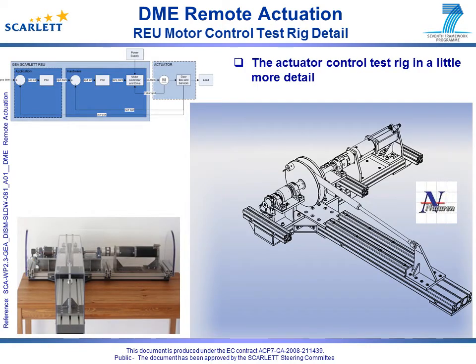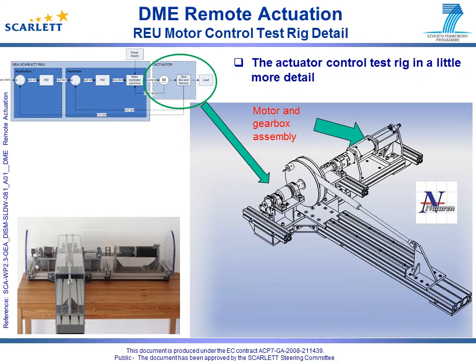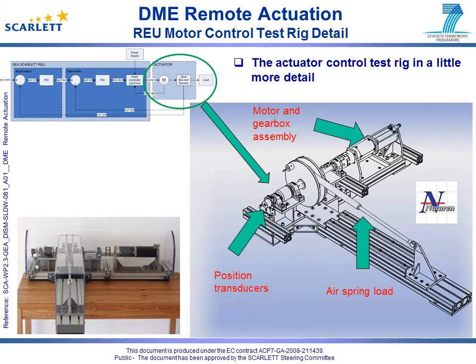The actuator is simulated by a test rig developed by Naturen Limited. The test rig is comprised of a motor and a gearbox assembly. The motor is loaded by an air spring assembly to simulate the load of flight control surfaces. The control loop feedback is provided by position transducers.